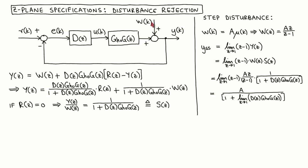We want to describe the effect of the disturbance signal on the measured output with the goal of designing the controller to minimize that effect. To do this, we write from the block diagram that the Z-transform of the measured output is the Z-transform of the disturbance signal plus the loop transfer function times the Z-transform of the reference input minus the measured output. After rearranging, we can write the output as one transfer function times the reference input plus another transfer function times the disturbance signal.